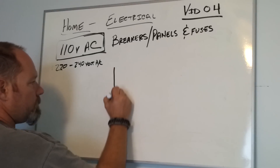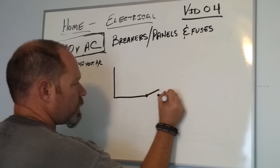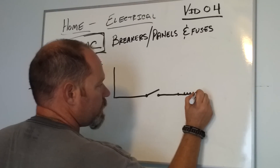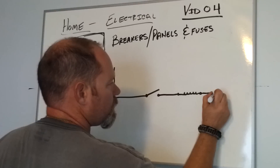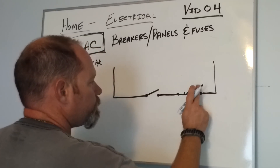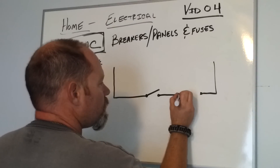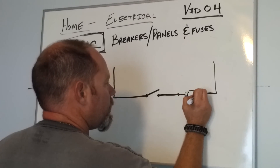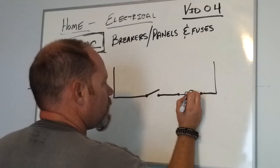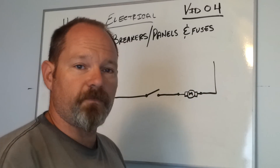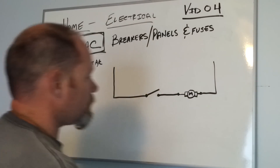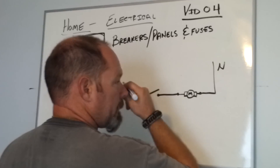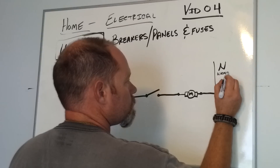In the last video I drew a simple schematic showing a switch operating a light. This time, instead of a coil, let's draw a motor — this could be the fan above your stove, for example. Again, we have the hot wire and the neutral, which is the white wire and the black wire.